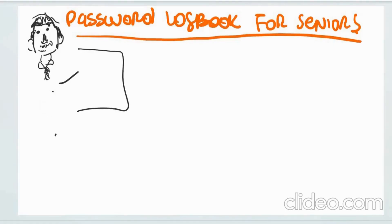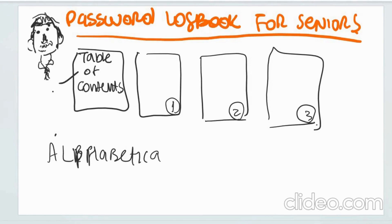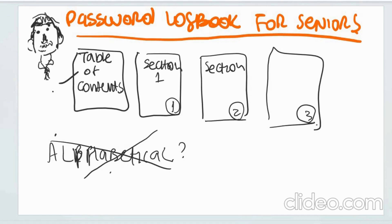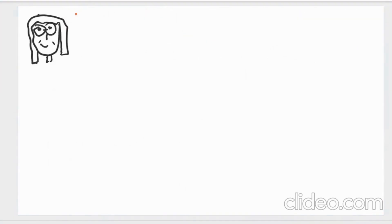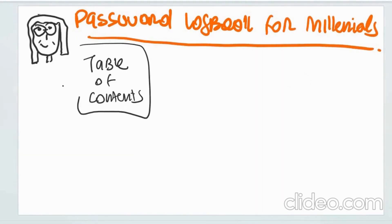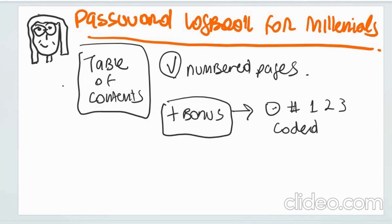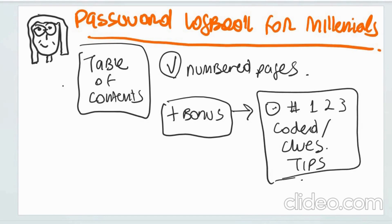Product number two would be a password logbook for seniors. In this book, I would be inclined to include a table of contents and numbered pages. I've seen many password logbooks with pages organized alphabetically like a phone book, but putting myself in the shoes of a senior like Tim who has fewer than 20 passwords to track, I think it would make more sense to divide the book into relevant sections like emails, bank accounts, and socials rather than alphabetically. Product number three is a password logbook for millennials. In this book, I would also include a table of contents and numbered pages, but I would also include a page with tips on how to write clues and codes to help remember passwords, and I might include more sections and pages to meet the needs of tech-savvy millennials.